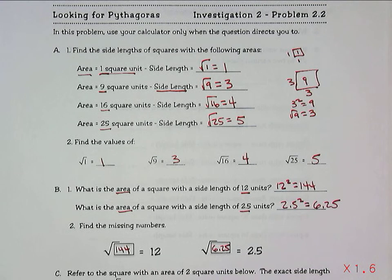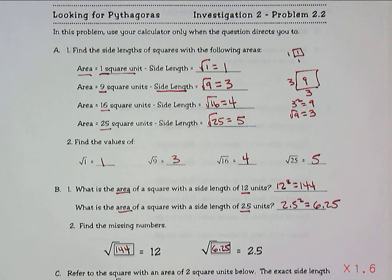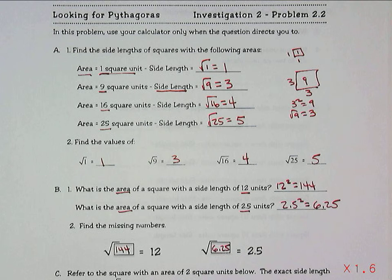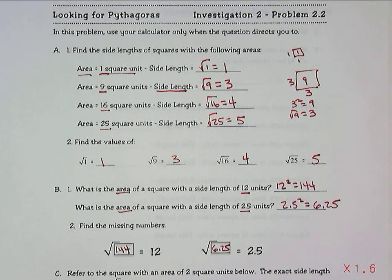We want to be able to find squares and square roots and then actually calculate those distances or numbers at some point. And so that should get you started on problem 2.2 as well as you continue to work with squares and square roots. Thank you.